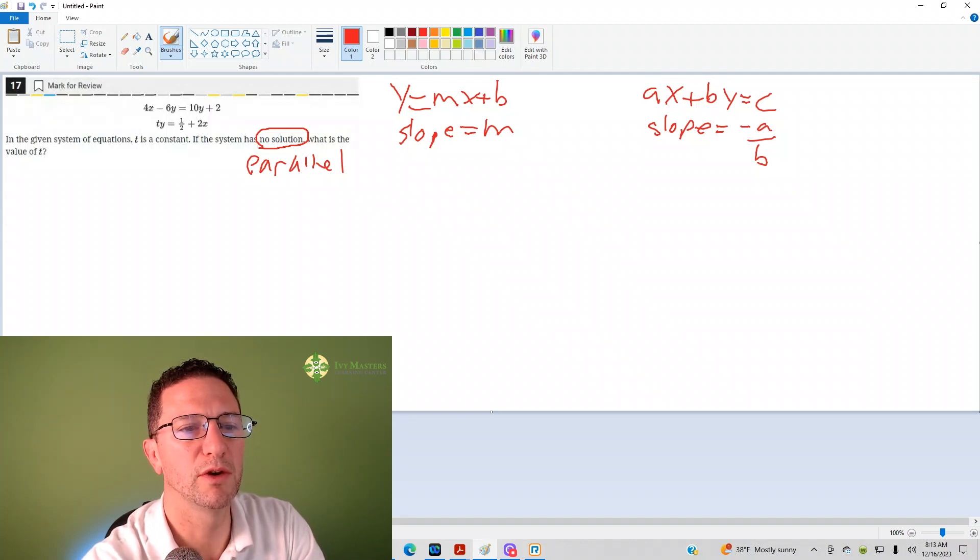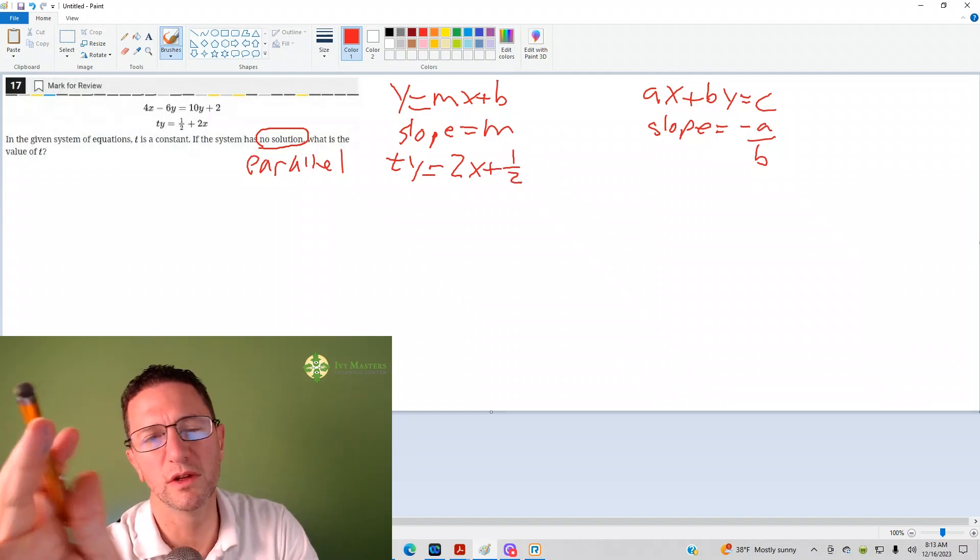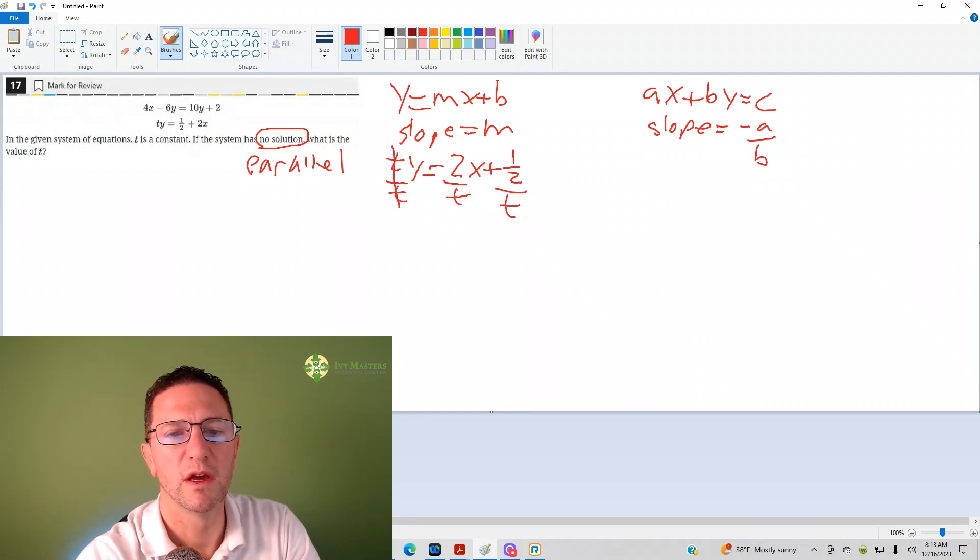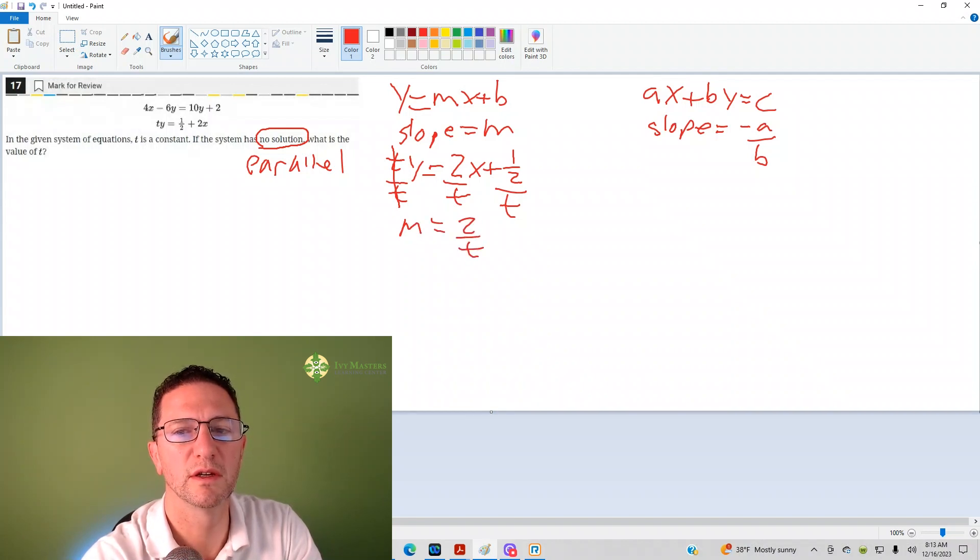ty equals 2x plus 1 half. If you notice, it's out of order, so it's a little bit more difficult to see in the form. So if I divide both sides by t, now don't worry about the double fraction with the y-intercept. You can see here that your slope is 2 over t.